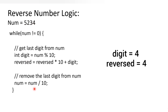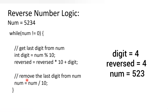We make use of the integer division operator, which gives us the quotient. Currently our number is 5234, so when divided by 10 we get the quotient 523. So our number is now updated to 523.